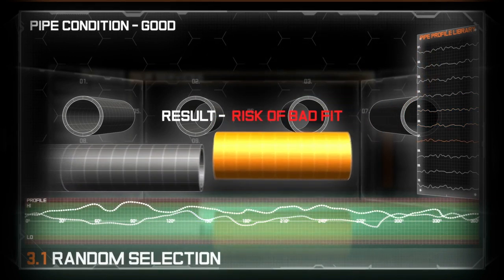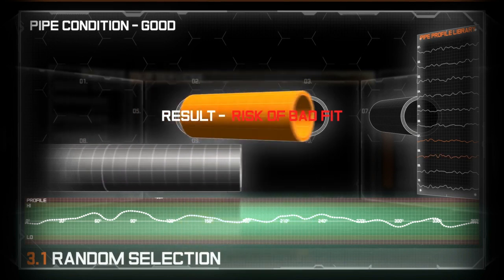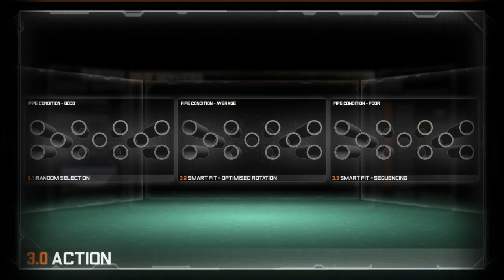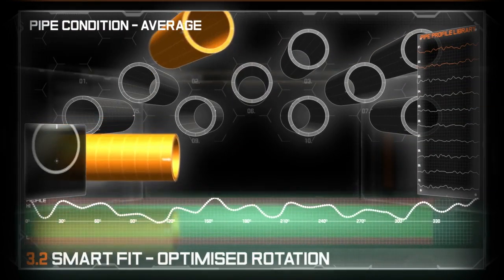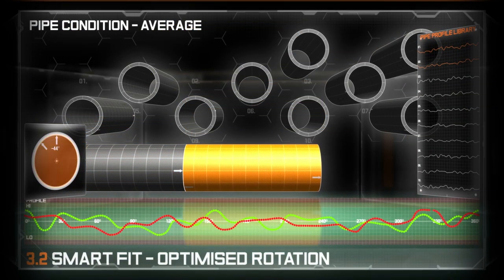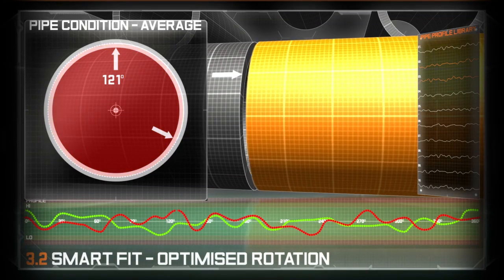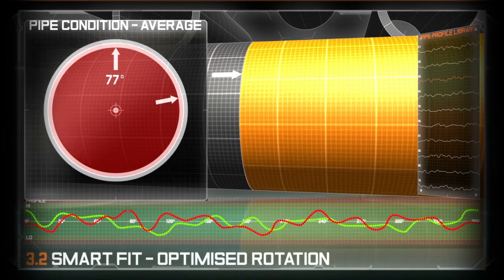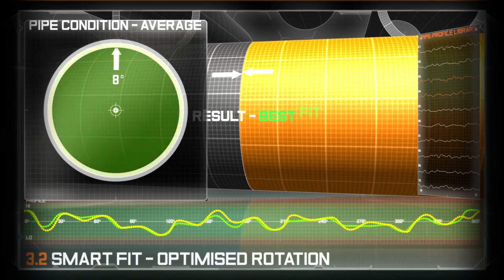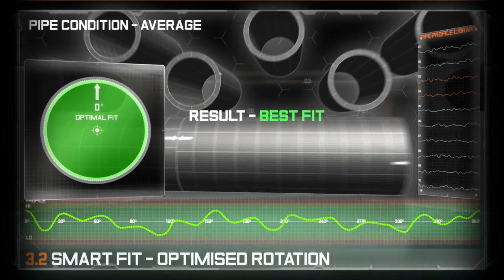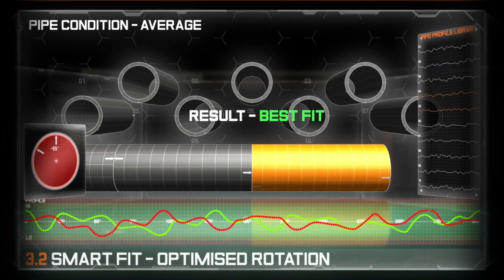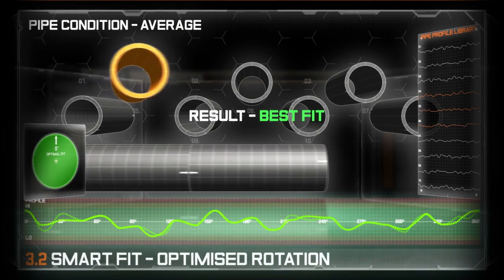The second is the recommended approach for pipes in average condition and uses OMS's SmartFit technology to achieve an optimal fit. As before the pipes are sequenced in random order. However, this time the SmartFit software uses the profile data from each pipe end and calculates the best rotation of the unattached or free pipe with the fixed, aligning the profiles to gain the best fit.